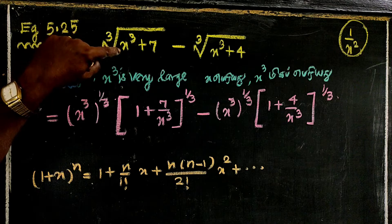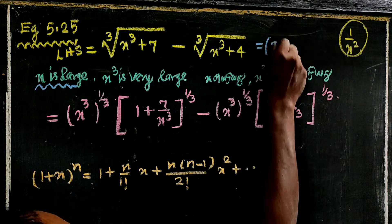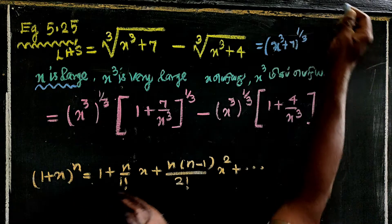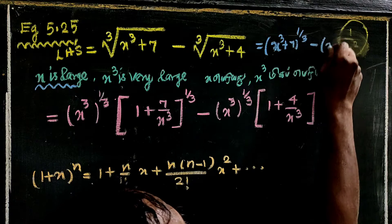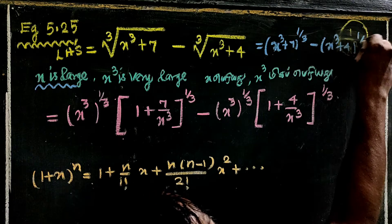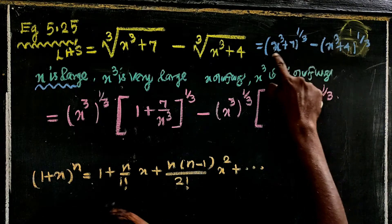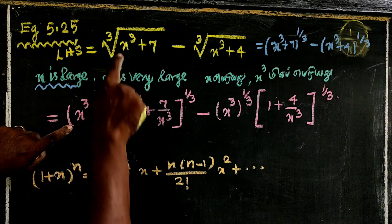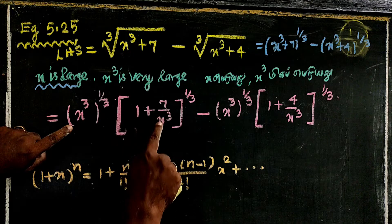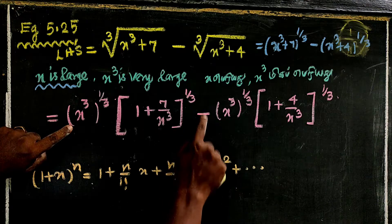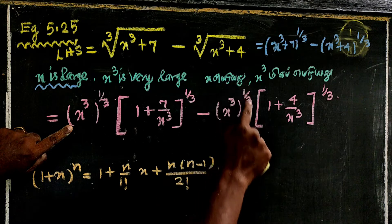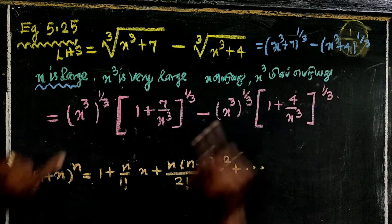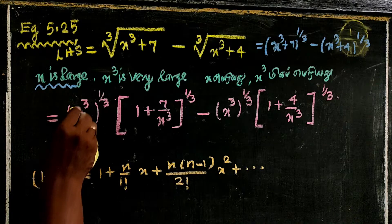What we mean is: (x³ + 7)^(1/3) minus (x³ + 4)^(1/3). We factor out x^(1/3): this becomes x^(1/3) times (1 + 7/x³)^(1/3) minus x^(1/3) times (1 + 4/x³)^(1/3).